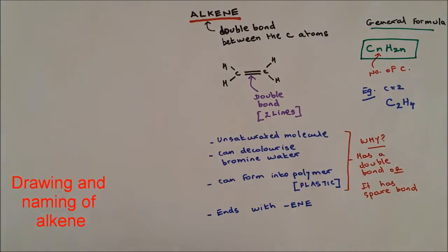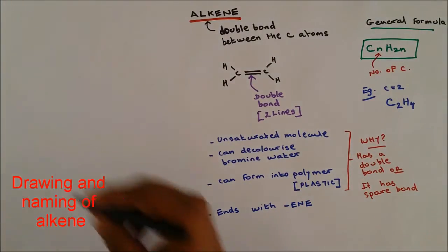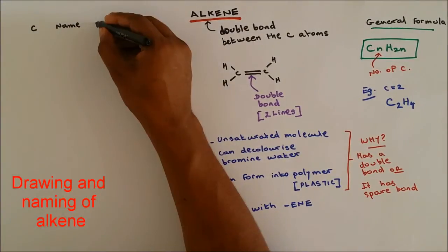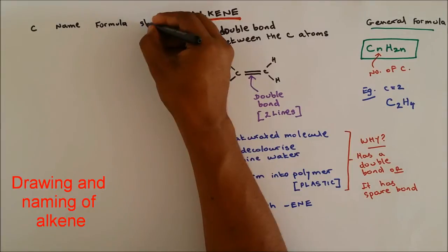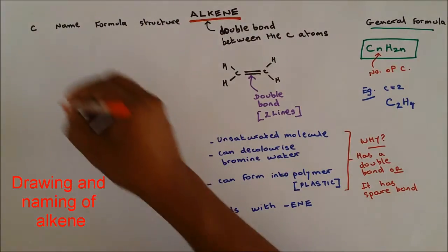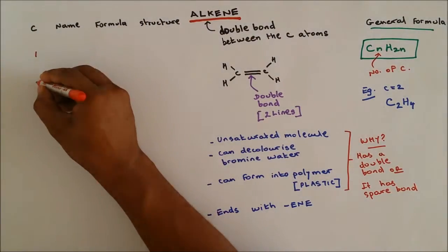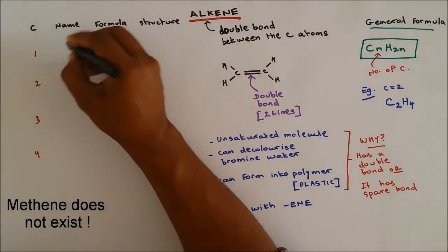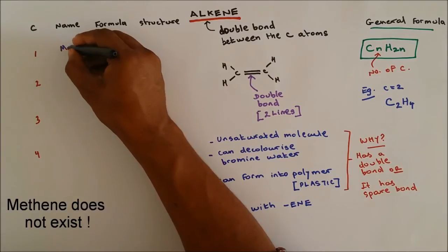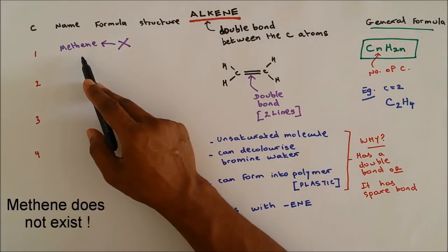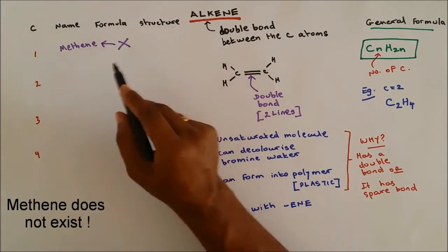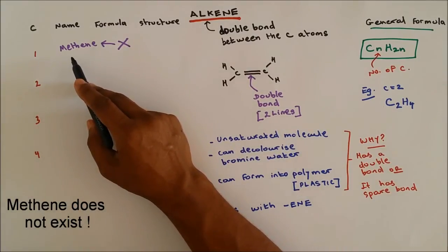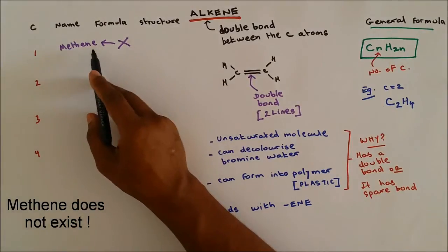Let's get into naming and drawing of alkene molecules. Carbon, name, formula, and structure - carbon 1, 2, 3, 4. Now there's no such thing as methene because methene has one carbon, but alkene needs to have a double bond and you cannot have a double bond with one carbon, so there's no such thing as methene.